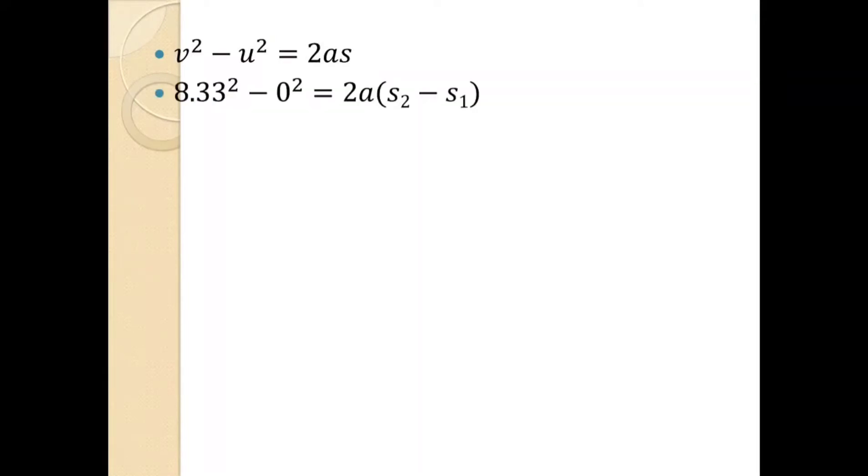Yes sir. So how much is a value? A is 1.73 meter per second square. 1.73 or 1.74 meter per second square, fine. Okay.